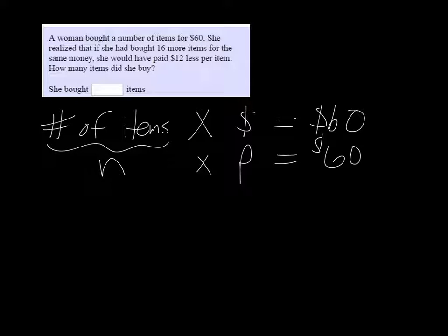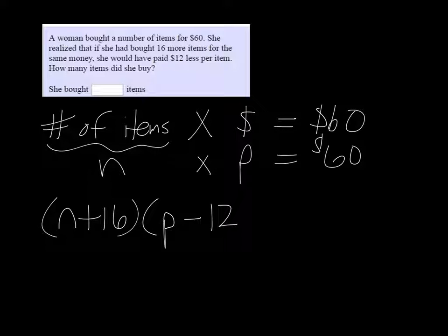Alright, and then we also have some information that if she had bought 16 more items, so that's N plus 16, she would have paid $12 less, so P minus $12 less per item. But overall she would have spent the same amount of money.